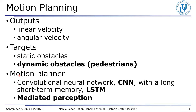We have thus far proposed the motion planner based on CNN with an LSTM block through mediated perception. As a result, the mobile robot based on the motion planner was enabled to avoid a walking person as a dynamic obstacle. However, the robot failed in avoiding the person walking faster. This was because depth images were used as inputs to the motion planner, and in the depth images, velocity information about the obstacle is not included.